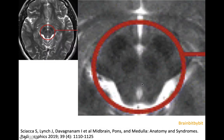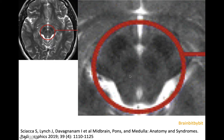Above the pons you're at the level of the midbrain, as in this T2-weighted image where you can see the substantia nigra anteriorly, the red nucleus as two black eyes on the T2-weighted image, and the ventral tegmental area — so important in dopamine circuitries — in between.